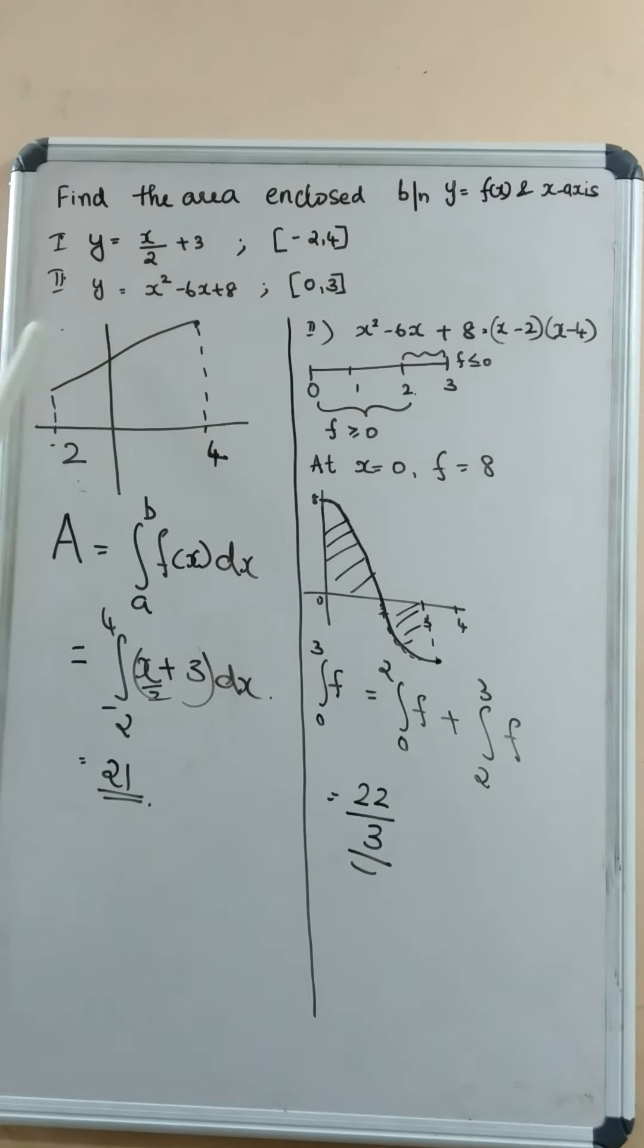In the second problem, we are given the curve y is equal to x square minus 6x plus 8. Now, consider the function x square minus 6x plus 8. It is not a linear equation, it is a quadratic equation or it is a polynomial.